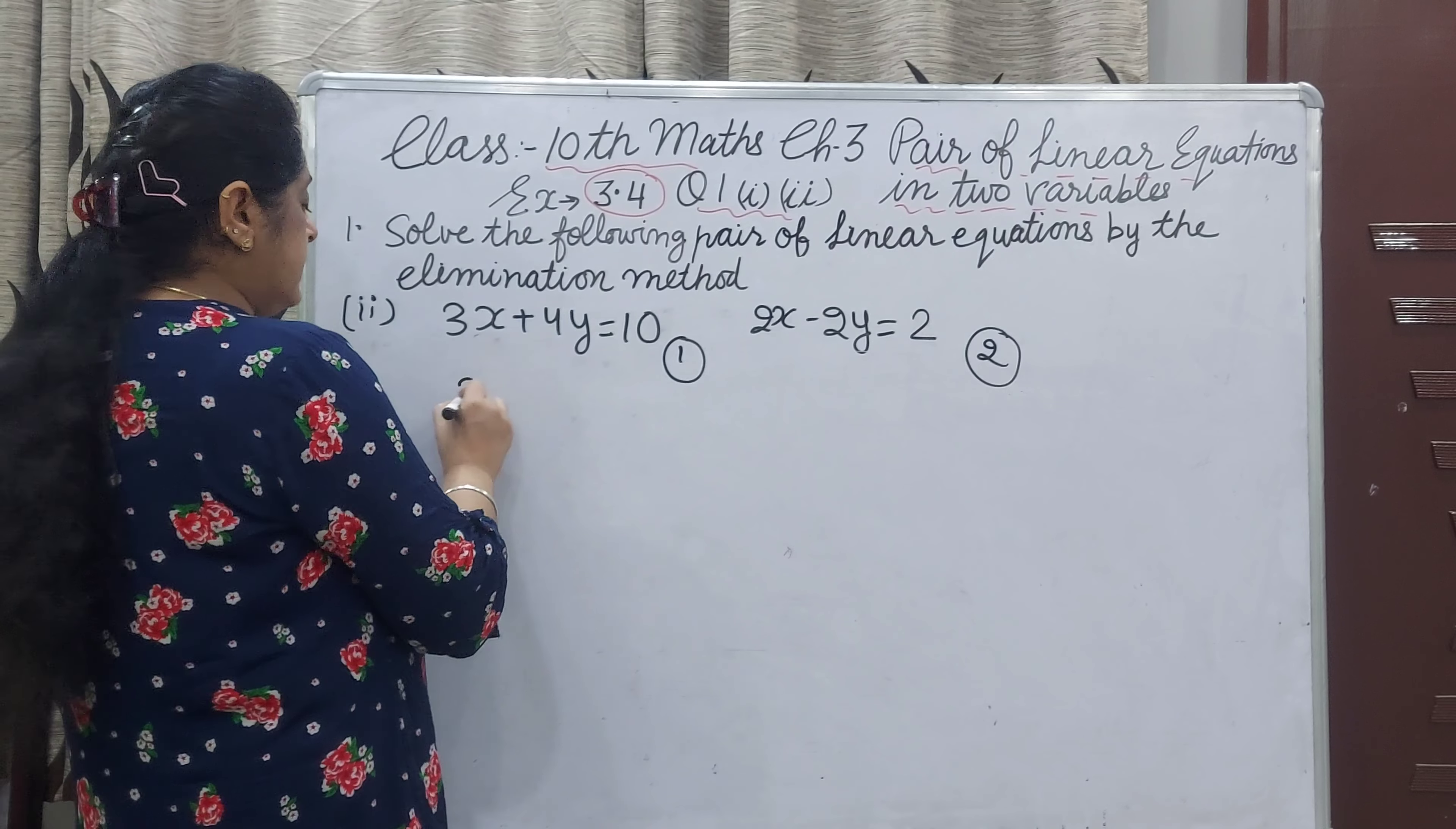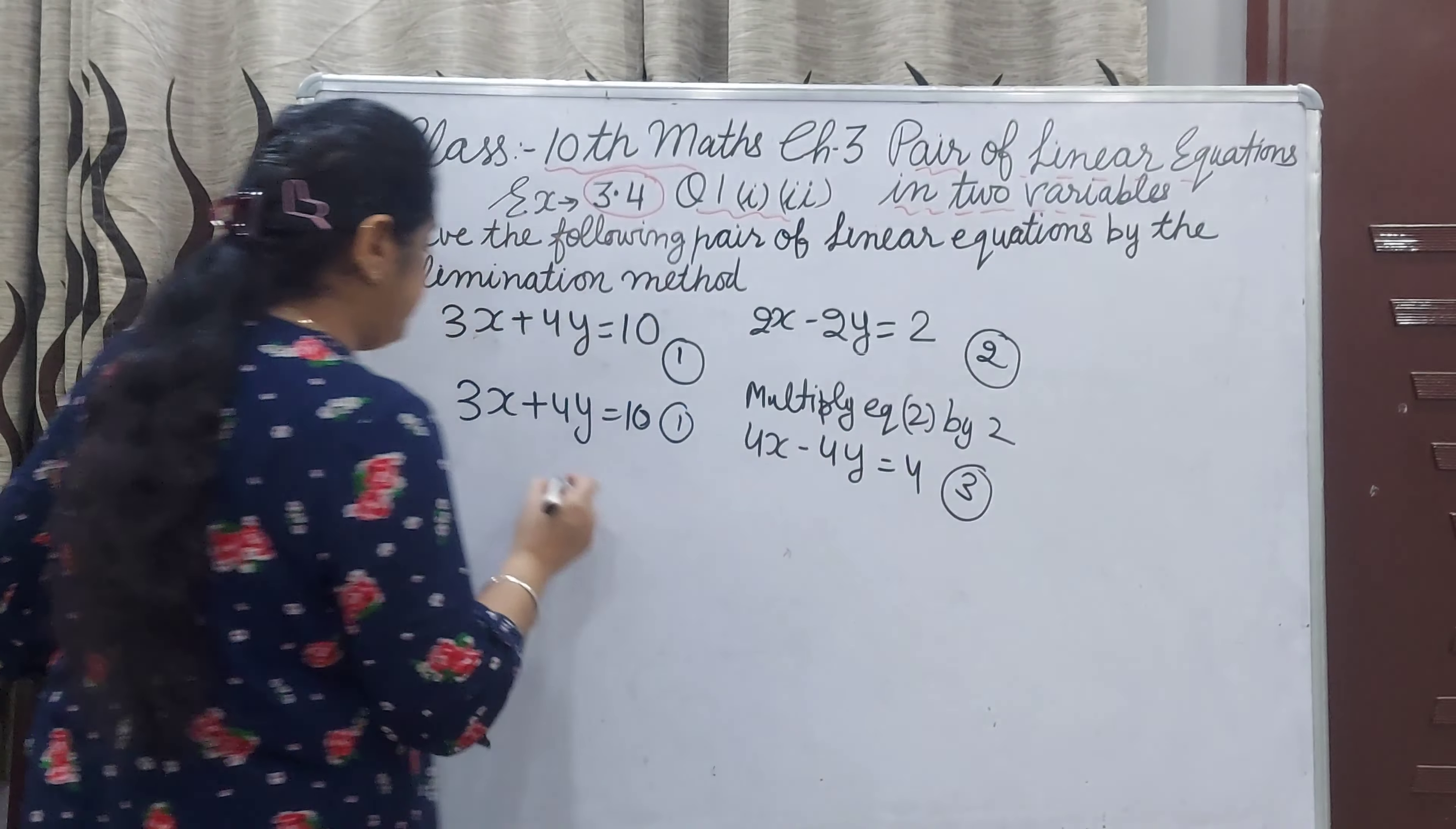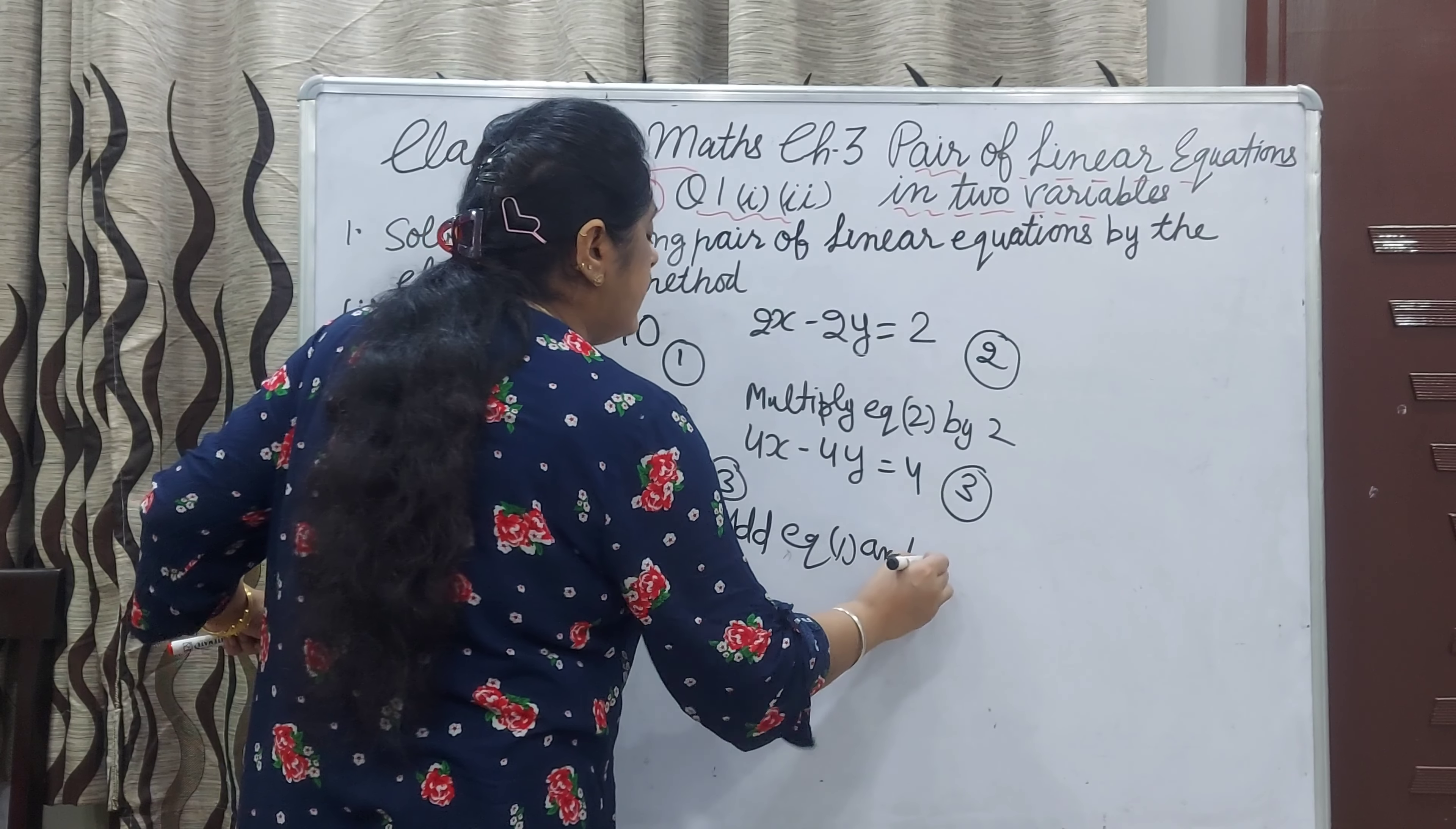First I will write 3x plus 4y equal to 10, and multiply equation 2 by 2. What you will get: 4x minus 4y equal to 4. This is equation 1. Now after multiplying this is equation 3: 4x minus 4y equal to 4. We have no need to change the sign because here 4y is positive and here 4y is negative. So you can add equations 1 and 3.